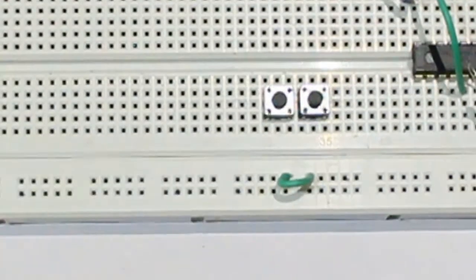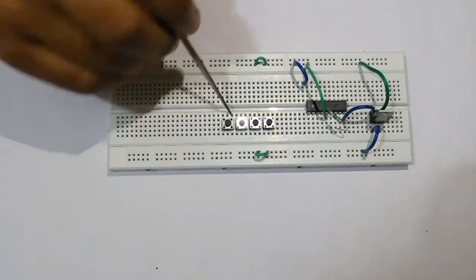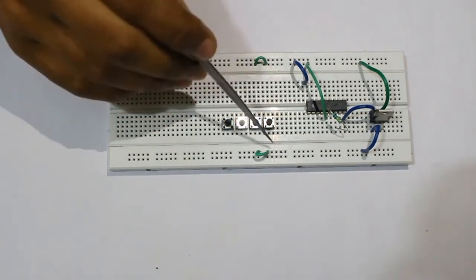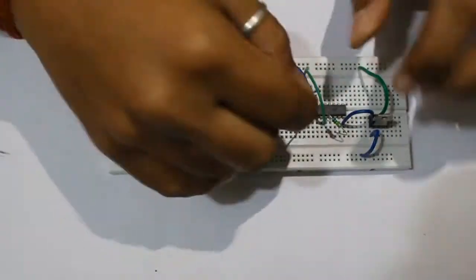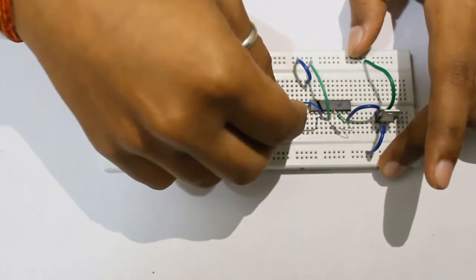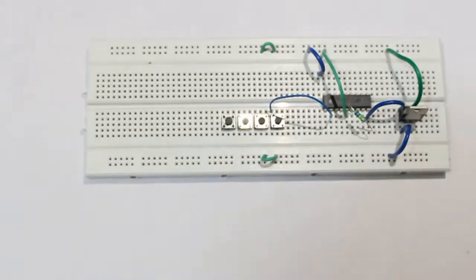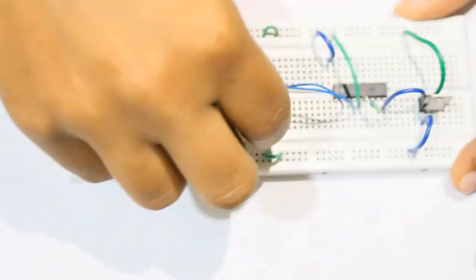So I will keep it accordingly. In the same manner I will place all the four push buttons. In this line these are shorted, that's why I will keep it like this. Now I will connect one wire from my data input line to one leg of the push button. In the same manner I will connect all my push buttons.